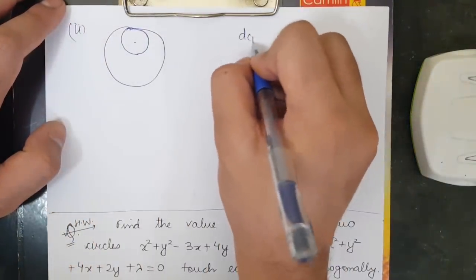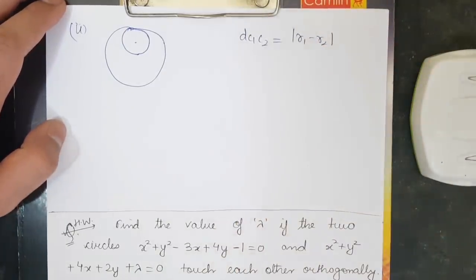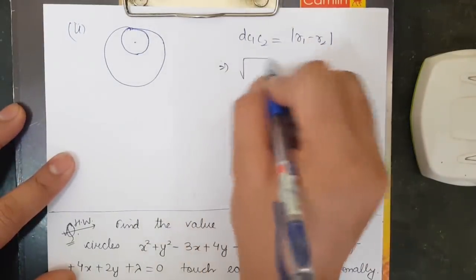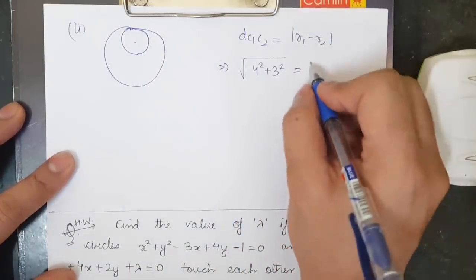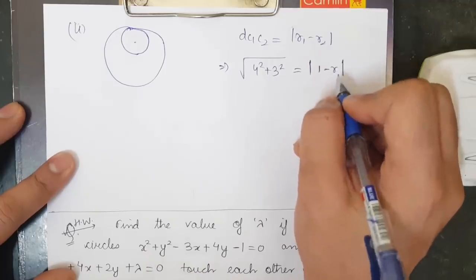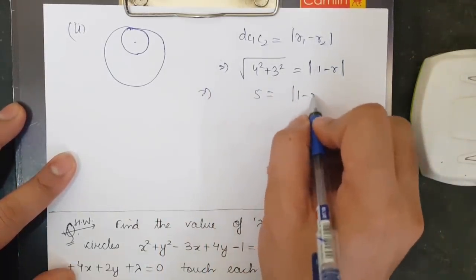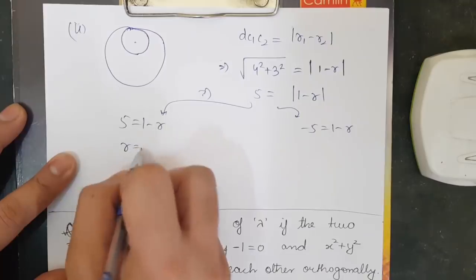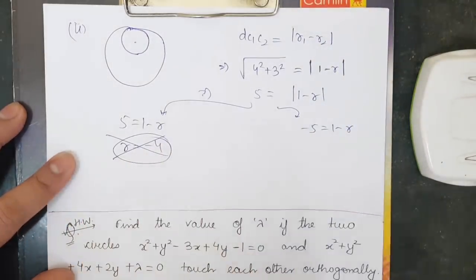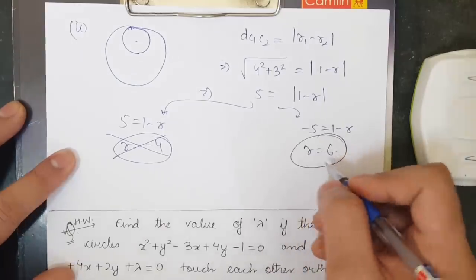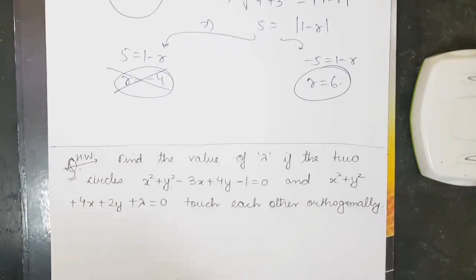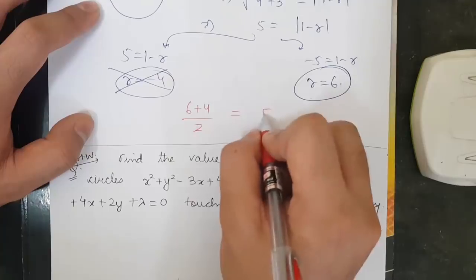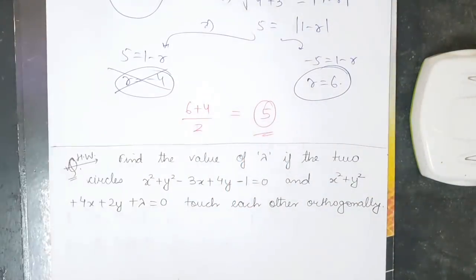For the second case (internal tangency): d(c1,c2) = |r1 − r2|, so 5 = |1 − r|. This gives 1 − r = −5, so r = 6 (the case r = −4 is rejected as radius cannot be negative). So we have two valid radii: r = 4 and r = 6. The required answer is (4 + 6)/2 = 5.